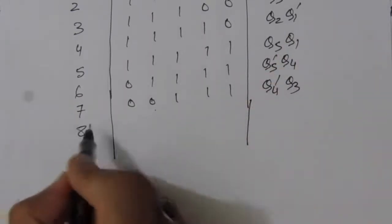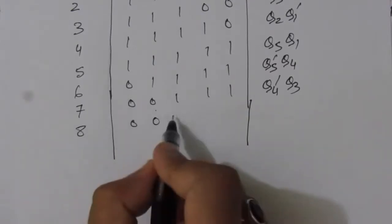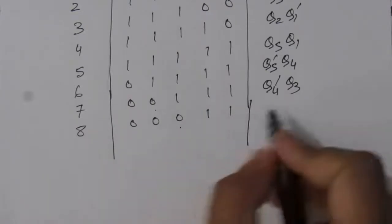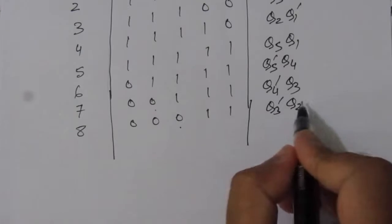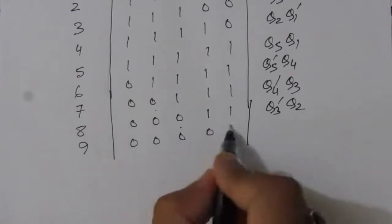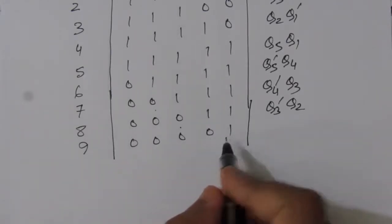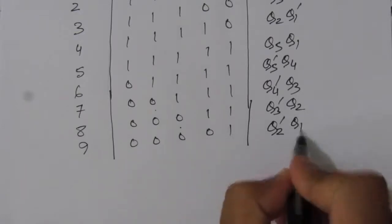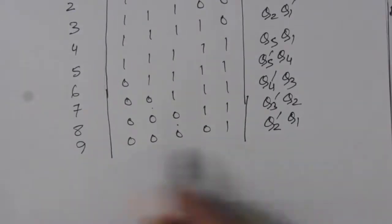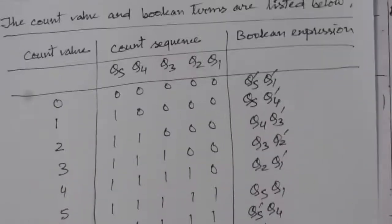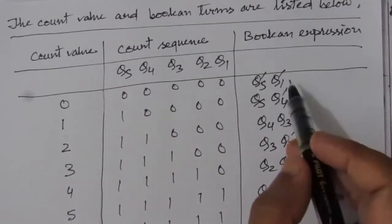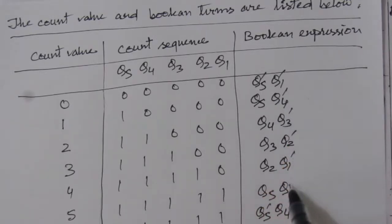For count 8: sequence is 00011, the adjacent transition is Q3=0 and Q2=1, giving Q3̄ · Q2. For count 9: sequence is 00001, Q2=0 and Q1=1, giving Q2̄ · Q1. After count 9 we return to 00000. The table gives 10 boolean expressions total — one AND gate output for each of the 10 states.